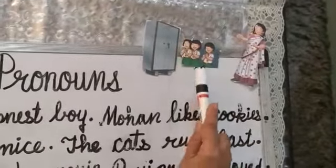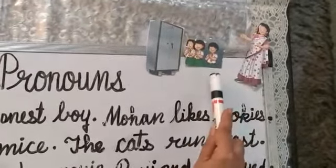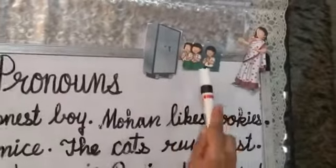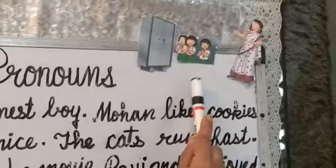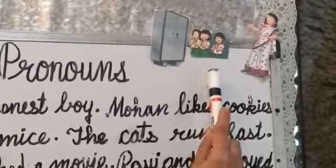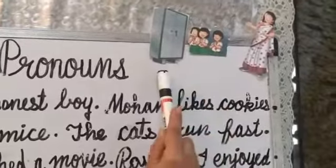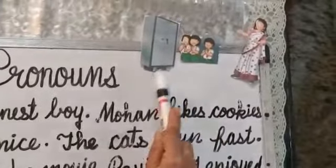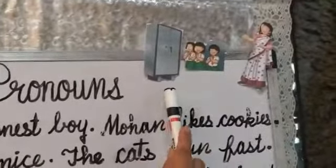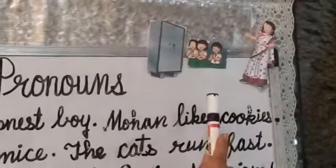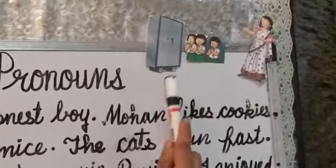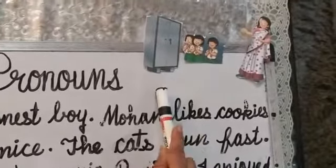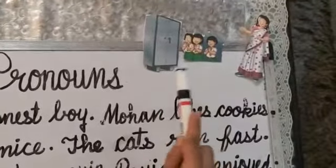Tina, Meena and Aksh are praying. Which pronoun do we have to use here? They. This is an Almira. It is spacious. Here I have used the pronoun 'it' in the place of Almira.